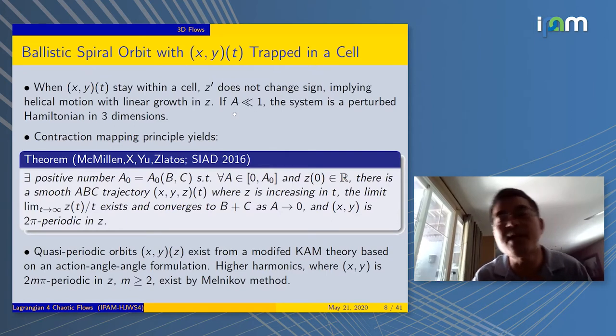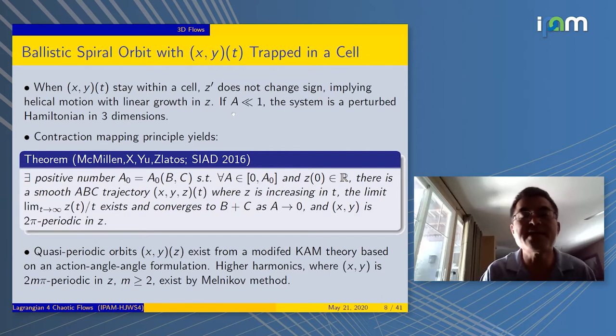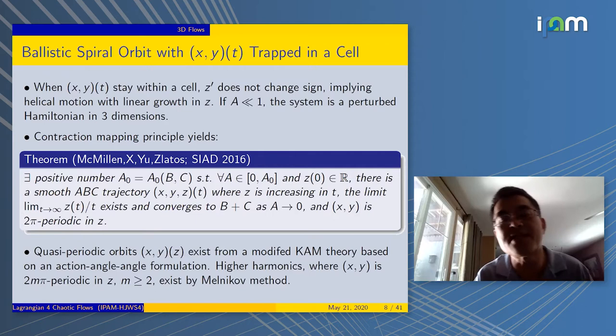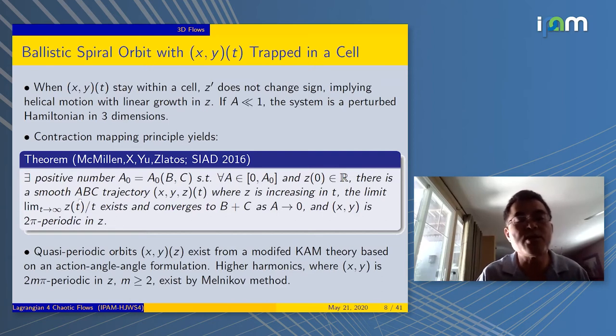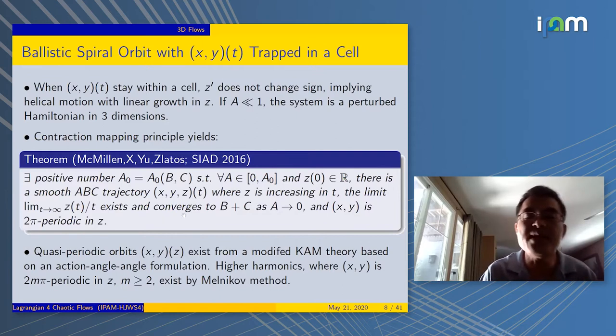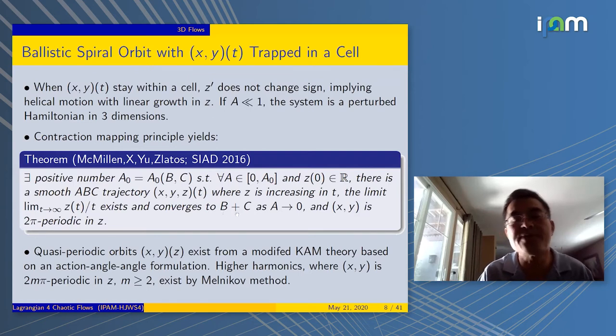It turns out that the ballistic orbit, the exact solution, can be perturbed into a spiral trajectory. You're not shooting straight. The trajectory can spiral, but it's still going upward. Here's our main result: if a were small enough, there is a perturbed trajectory, which we call the smooth trajectory, that has an asymptotic speed.